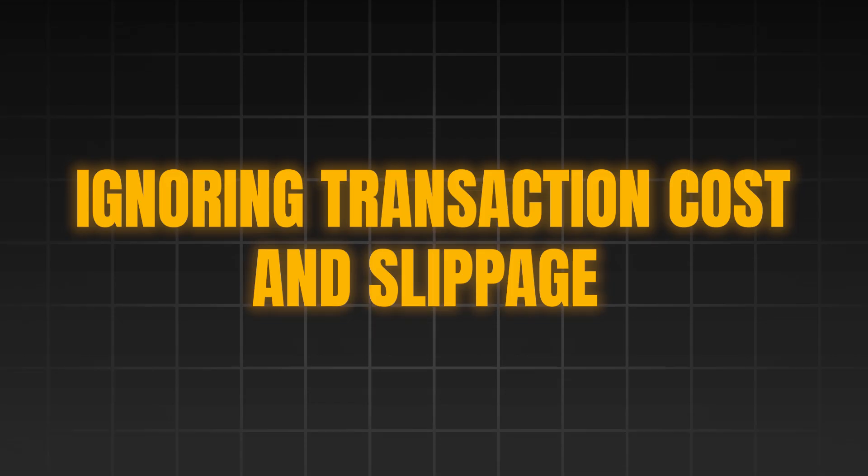Just focus on creating a strategy that works well in the market condition. For example, if you are going to take a moving average crossover strategy, instead of adjusting its parameters to match exactly to the past historical data, just keep it simple with the same parameters and execute based on different time frames.